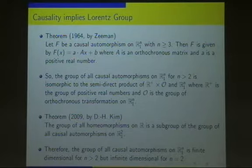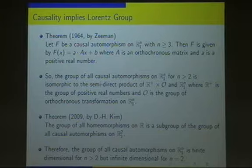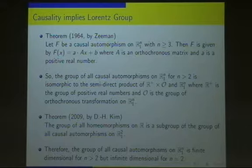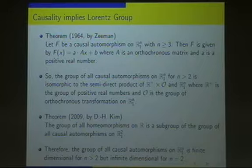Here, small a is a positive real number and capital A is an orthochronous matrix. An orthochronous matrix is a counterpart to an orthogonal matrix in Euclidean space. Chronous means that this matrix must send future-directed time-like vectors to future-directed time-like vectors — it must not reverse the time orientation. The number of citations of his paper is over 300 times, so it is very famous in the Lorentzian geometric community. But as he commented, his theorem does not hold in two-dimensional Minkowski space. That is the open problem.